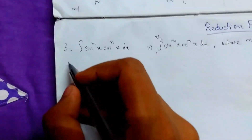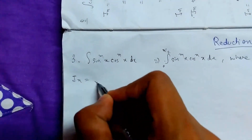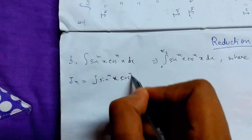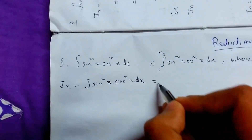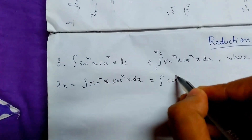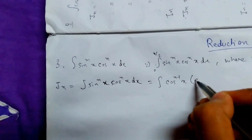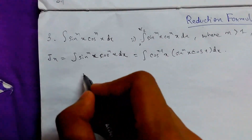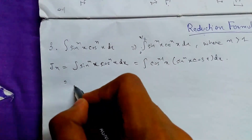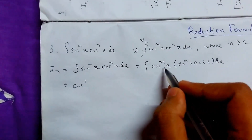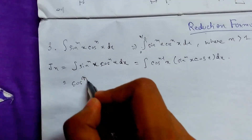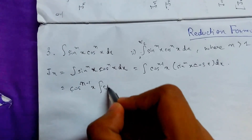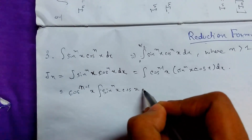So let's start the solution. We will assume J(m,n) to be the integration of sin^m(x) cos^n(x) dx, similar to what we have done previously. We will reduce this — writing cos^n(x) as cos^(n-1)(x) times cos(x) dx. Now we will apply integration by parts, keeping cos^(n-1)(x) as our first function.